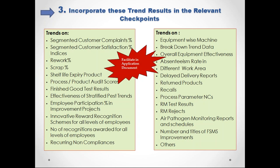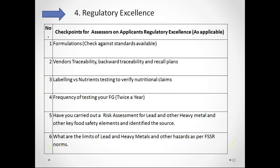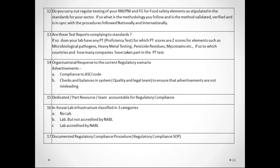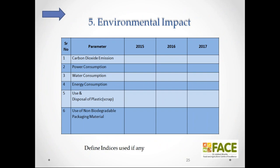This is the regulatory excellence check sheet, also part of the application document, containing about 17 points including environmental impact data for the last three years. If this information is available, great; if not, simply note that the company does not track this information. No point in insisting — just ask, and if they have it, well and good; otherwise, record that the company does not practice tracking of this information.